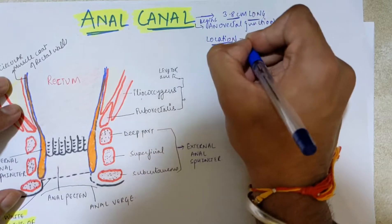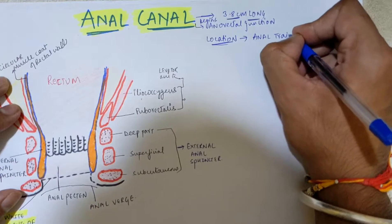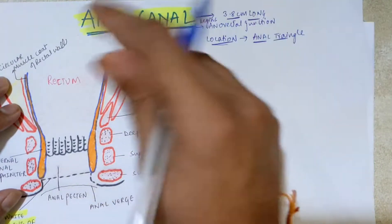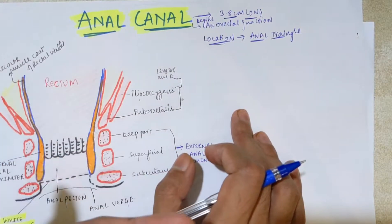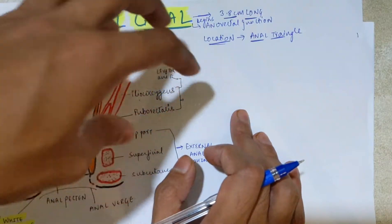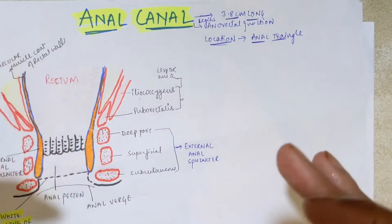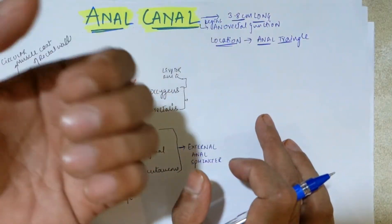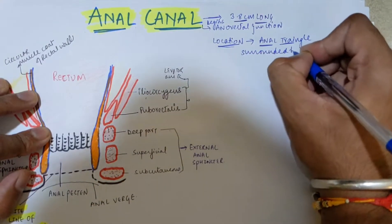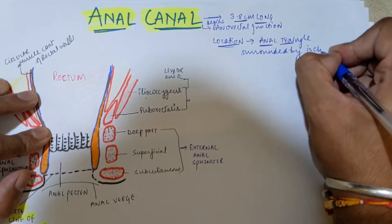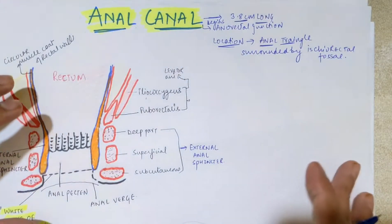With respect to location, the anal canal is present in the anal triangle and passes through the perineum, continuing into the anal orifice. On its left and right sides, it is surrounded by a fat-filled space called the ischiorectal fossa.